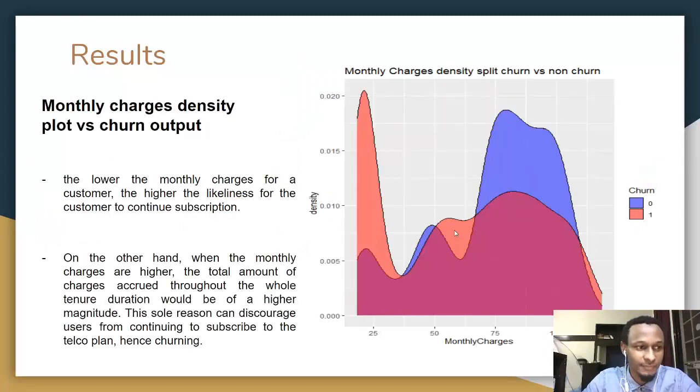Coming to the monthly charges, here we can see from the figures that it was observed that the lower monthly charges for a customer, the higher the likelihood for the customer to continue the subscription. The reason behind this is that the lower monthly charges means that the lower monthly commitment for a customer, which will not burden them financially if they choose to continue the subscription to the telco service. On the other hand, when the monthly charges are higher, the total amount of charges accrued throughout the whole tenure duration will be in a higher magnitude. This reason can discourage users from continuing to subscribe to telco plan. Hence, it will lead the customer to churn.